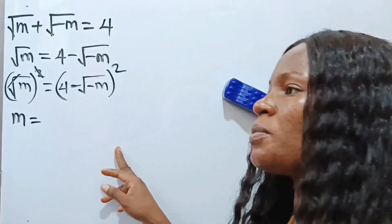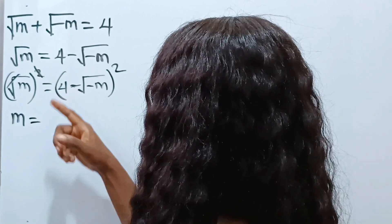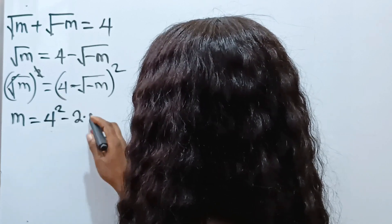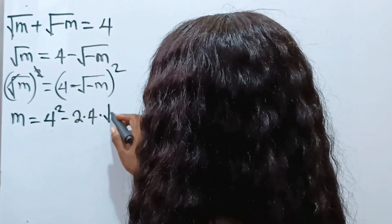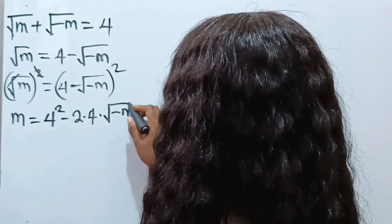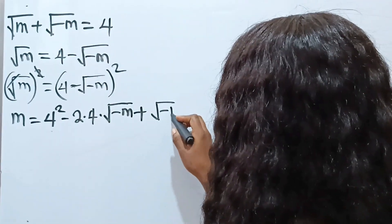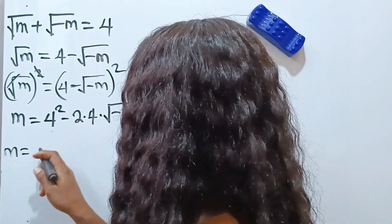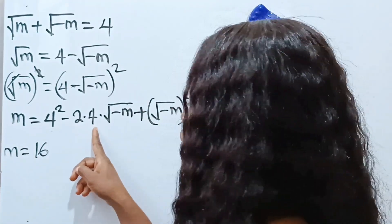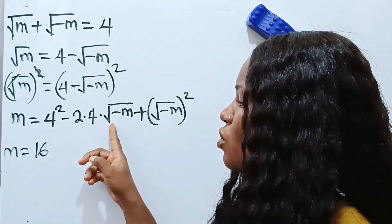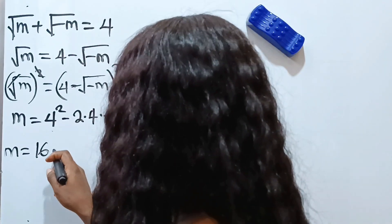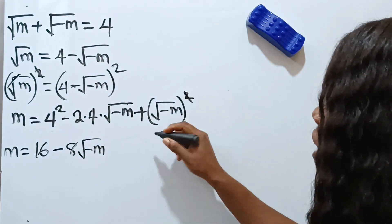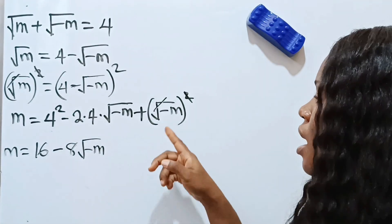We express it using the identity: a squared is four squared, minus two ab which is two multiplied by four multiplied by square root of negative m, then plus b squared which is square root of negative m, squared. So m equals four squared which gives us 16, minus eight root of negative m — that is minus eight root of negative m — and the square root cancels the square on the last term, leaving minus m.